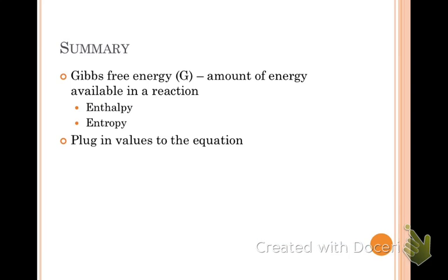So to summarize, Gibbs free energy, or G, is the amount of energy available in the reaction. It takes into account enthalpy and entropy. So enthalpy is your delta H, entropy is your delta S. Plug in values into the equation just to see whether or not it will occur, so whether or not the reaction will occur spontaneously, or if it needs an input of energy, like a battery. You want delta G to be negative. That's the big deal here. Great. Have a good day.